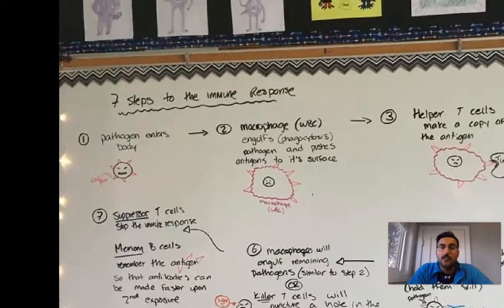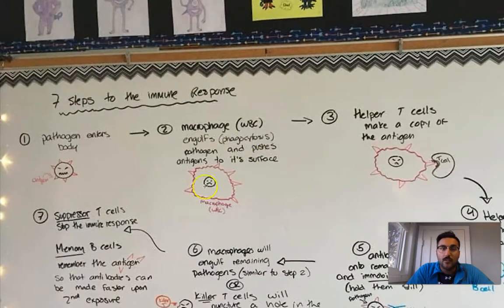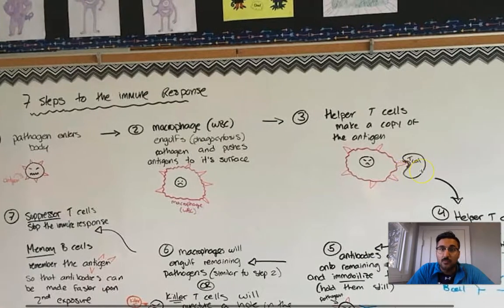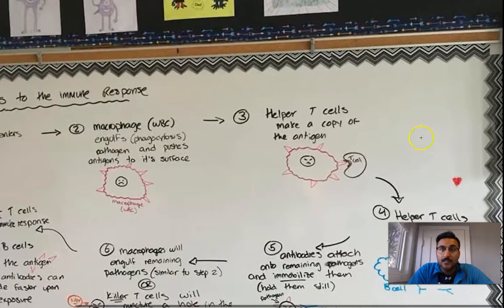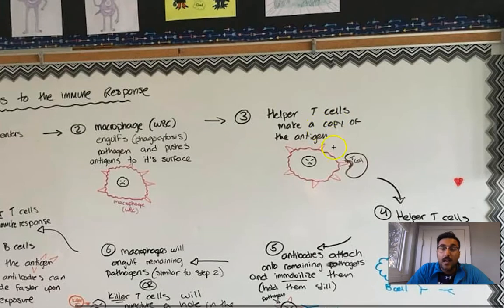That might seem strange, you might wonder, well why is the white blood cell, the macrophage, all of a sudden putting the face, if you will, the antigens, the face of the pathogen on its surface? Well that's so that other cells in the immune response, like helper T cells, can identify the antigens of the certain pathogen that has been found in the body by the macrophage, and it can make copies of it.